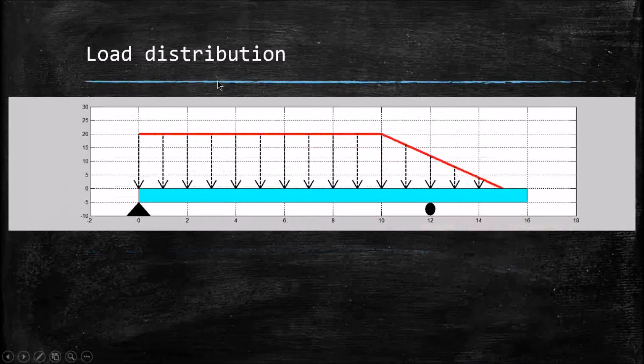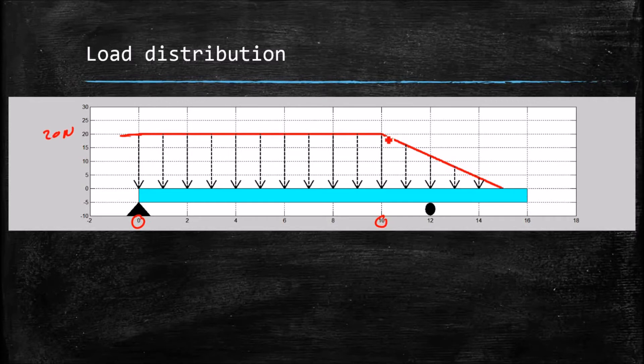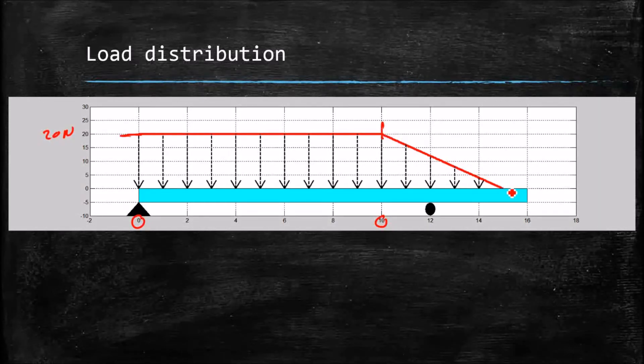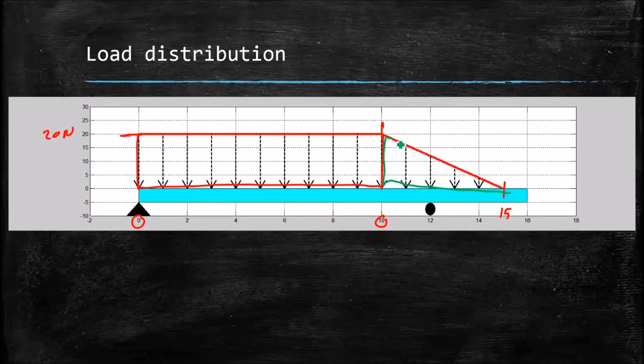So here's our load distribution from 0 to 10 meters, it has a magnitude of 20 newtons. And then at 10 meters, between 10 meters and 15 meters, it tapers off linearly down to 0. So we can take this force and divide it into two parts: a rectangular section and a triangular section.